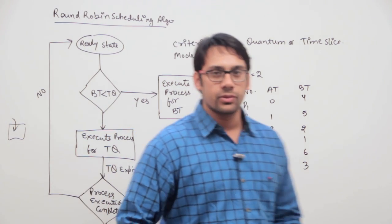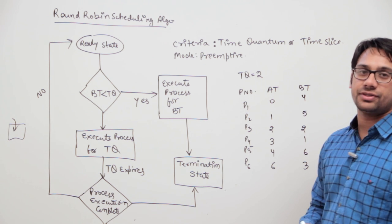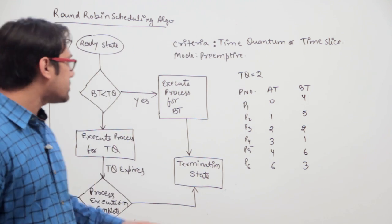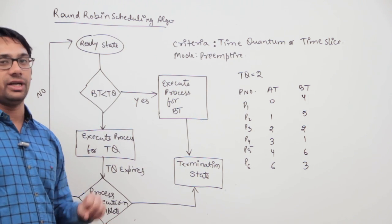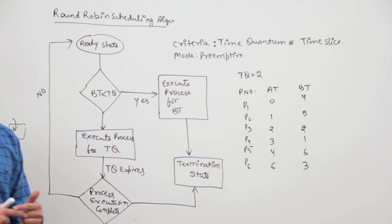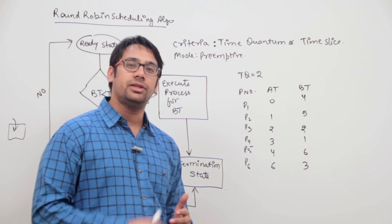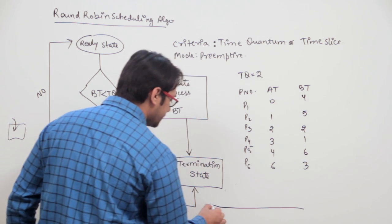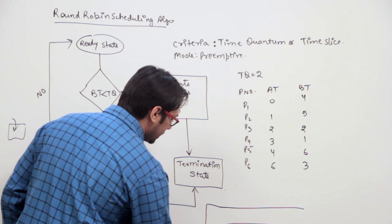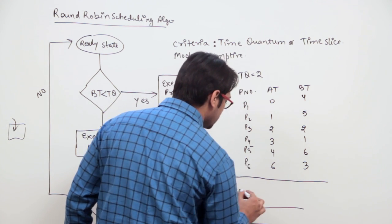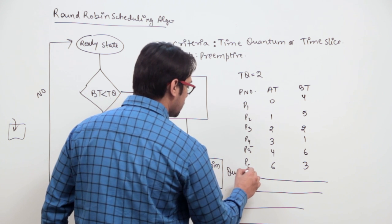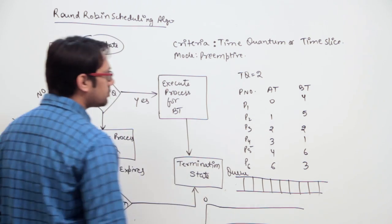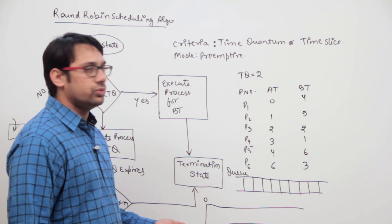Let us look at this example. We have six processes, with the arrival time and burst time of each process. In the round-robin scheduling algorithm, we maintain a queue — processes that complete their time quantum but are not finished will sit back in the queue. Here is the Gantt chart, and we will maintain a queue of processes. At time 0, I have taken the time quantum as 2.